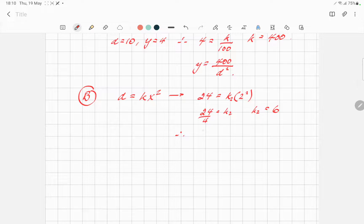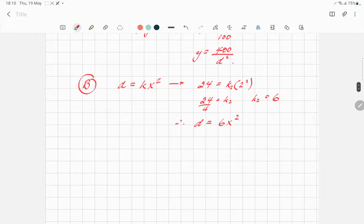So, therefore, the formula for d equals 6x squared. Which I think you got in your solution. That was good.